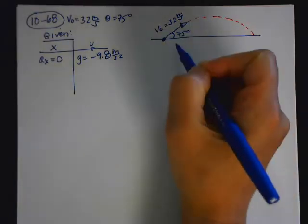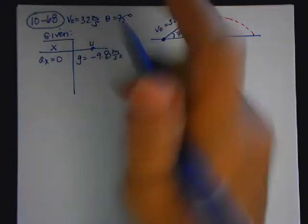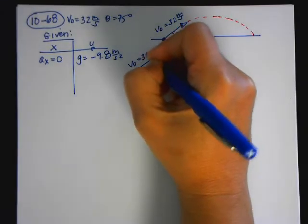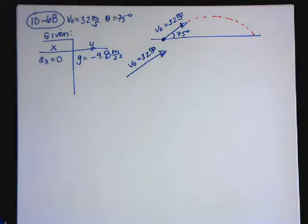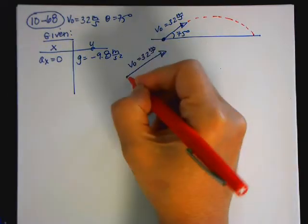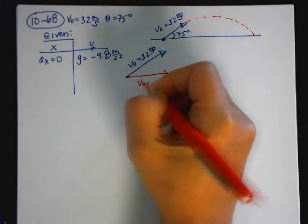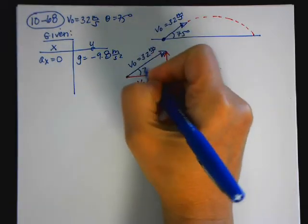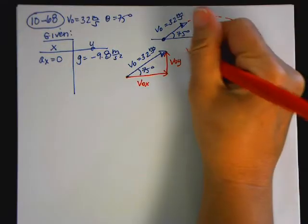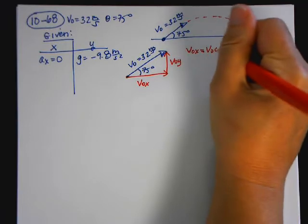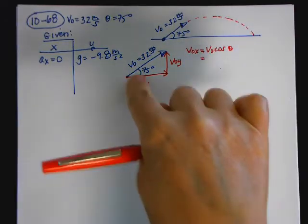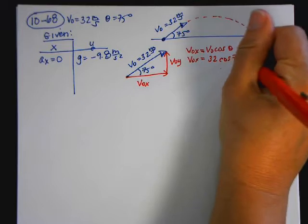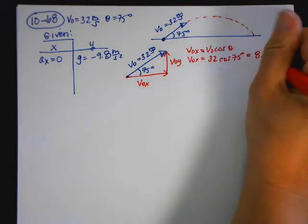Whenever you're given the initial velocity with the angle, you should immediately find the horizontal and vertical components. V-naught X is equal to V-naught cosine of theta — it's cosine because it's adjacent to the given angle. So V-naught X equals 32 cosine of 75 degrees, which comes out to be 8.28 meters per second.